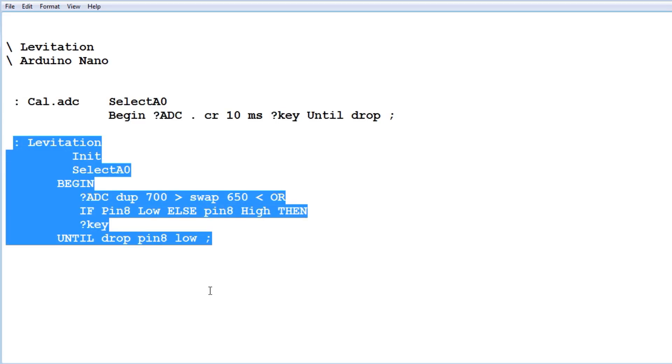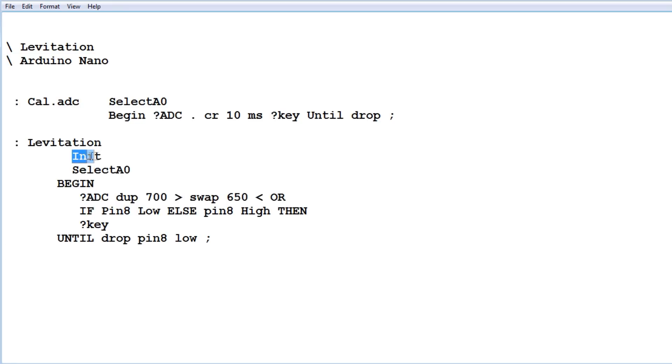So this is my whole code here, it's called levitation. So if I run that, the first thing it does is init, initializes pin 8 as an output. That's a GPIO pin, and that's going to drive the gate of the MOSFET to energize the electromagnet.